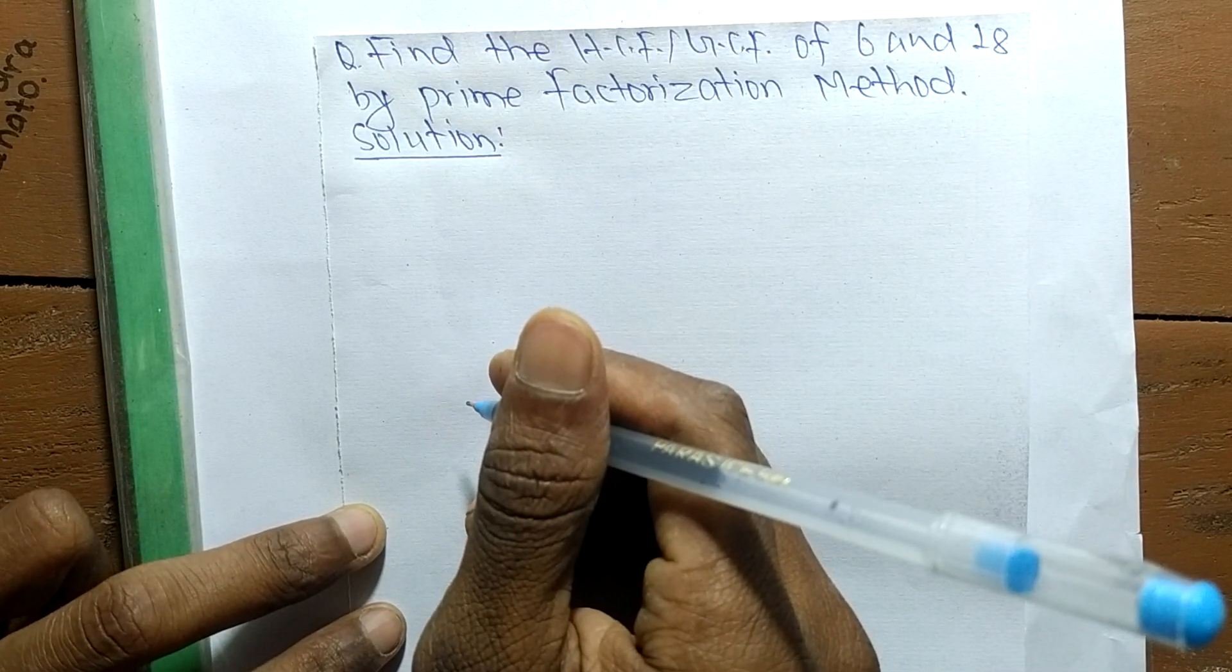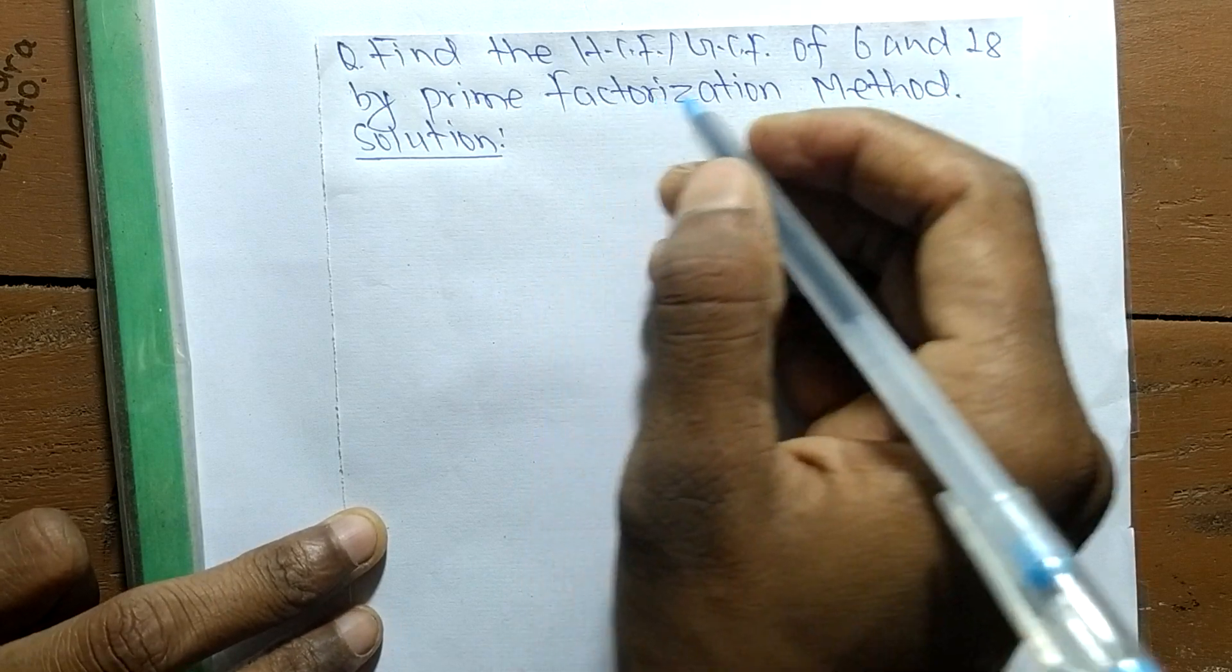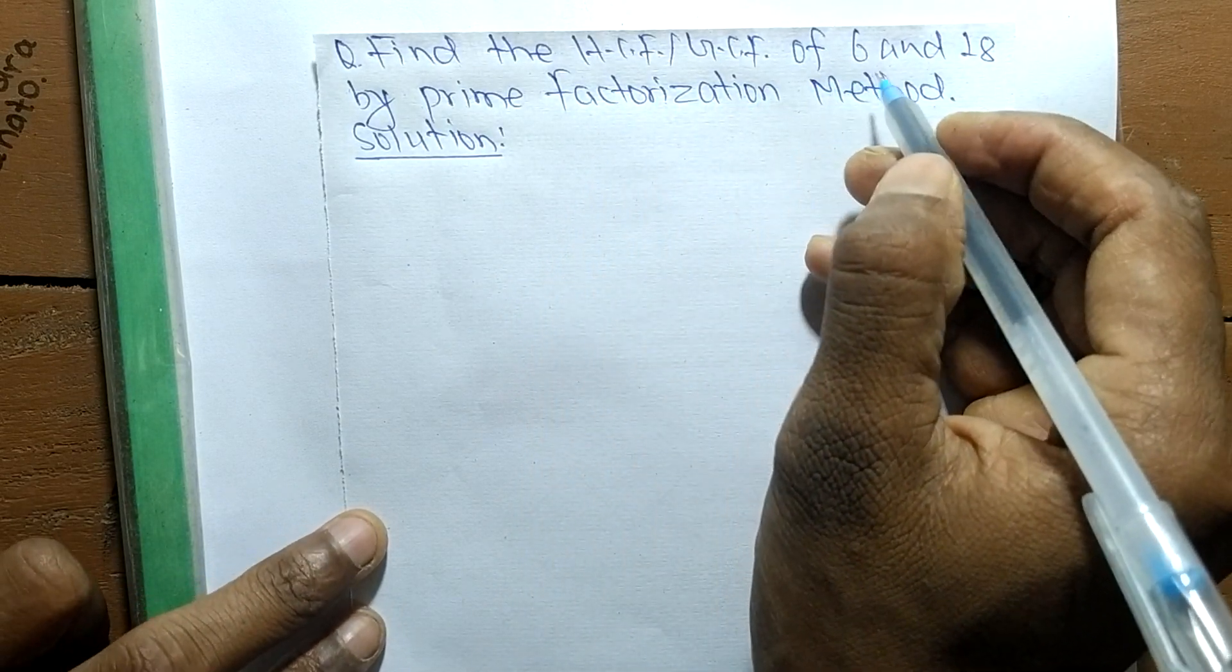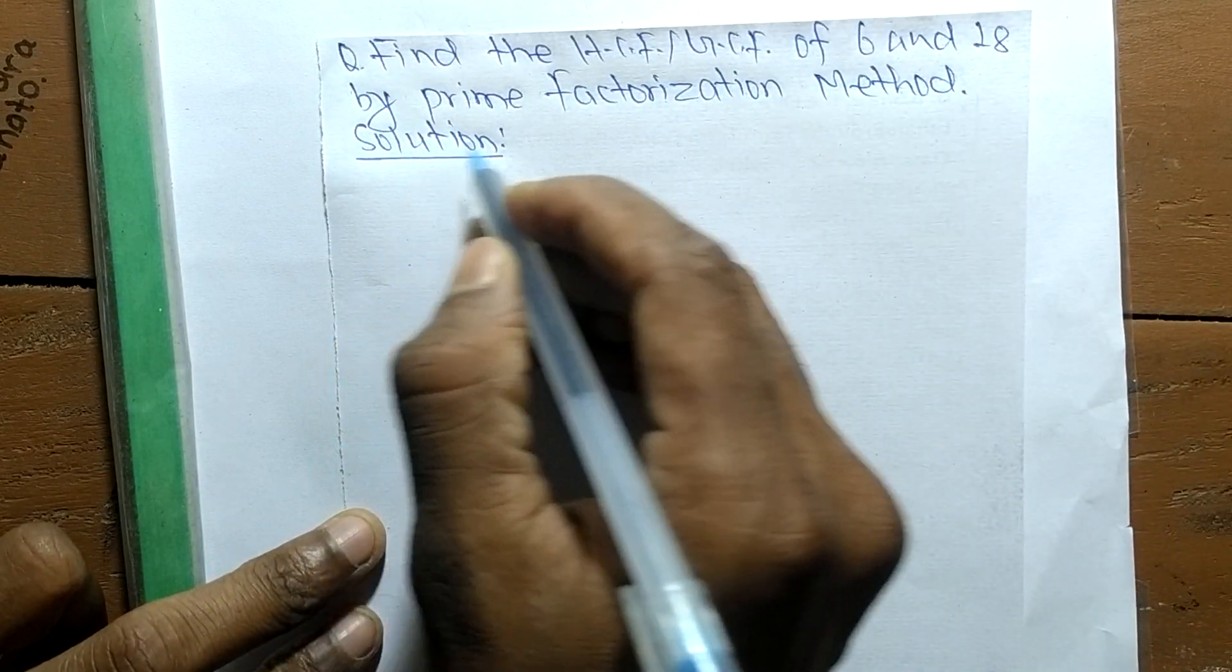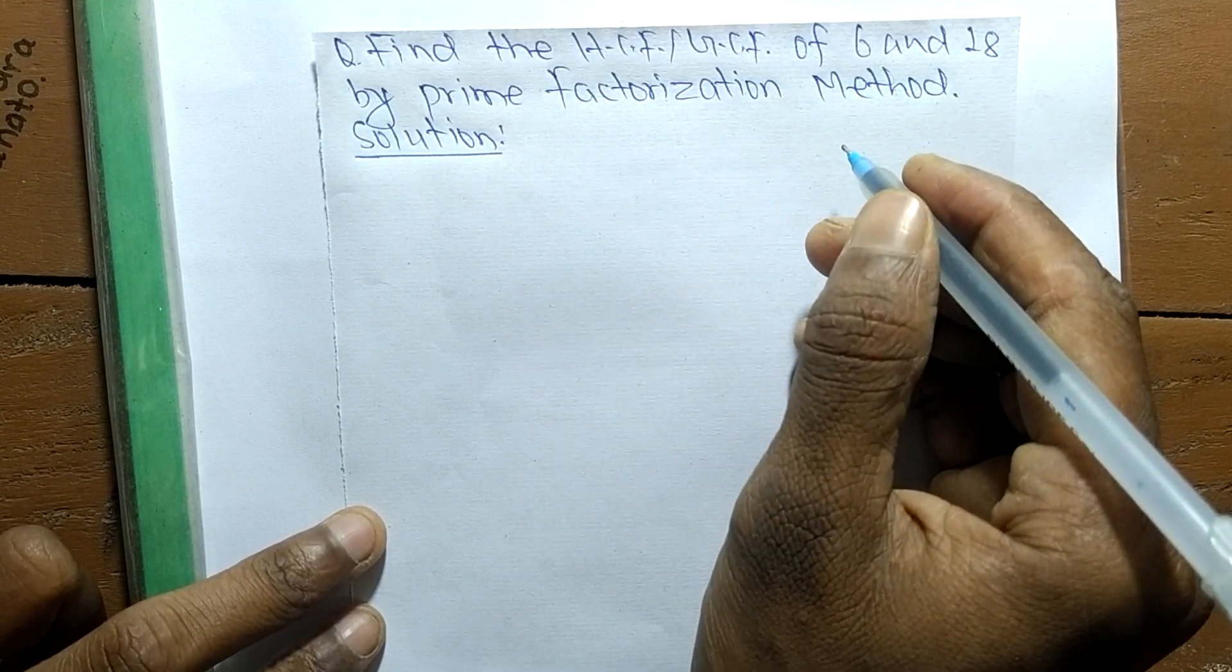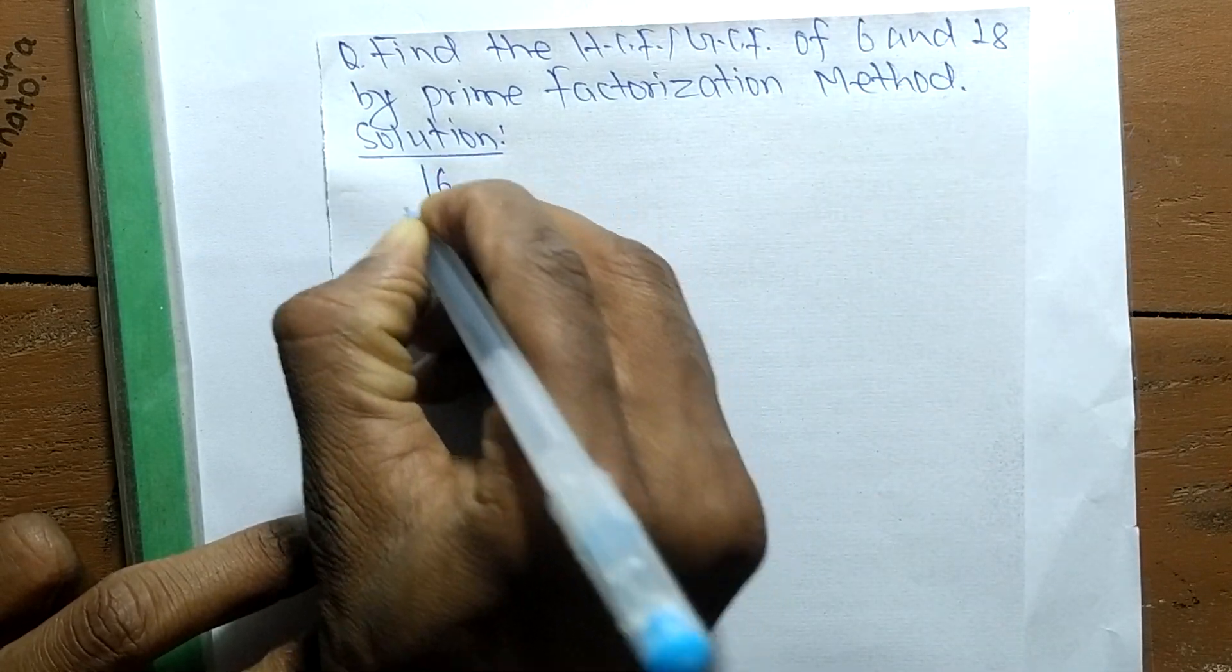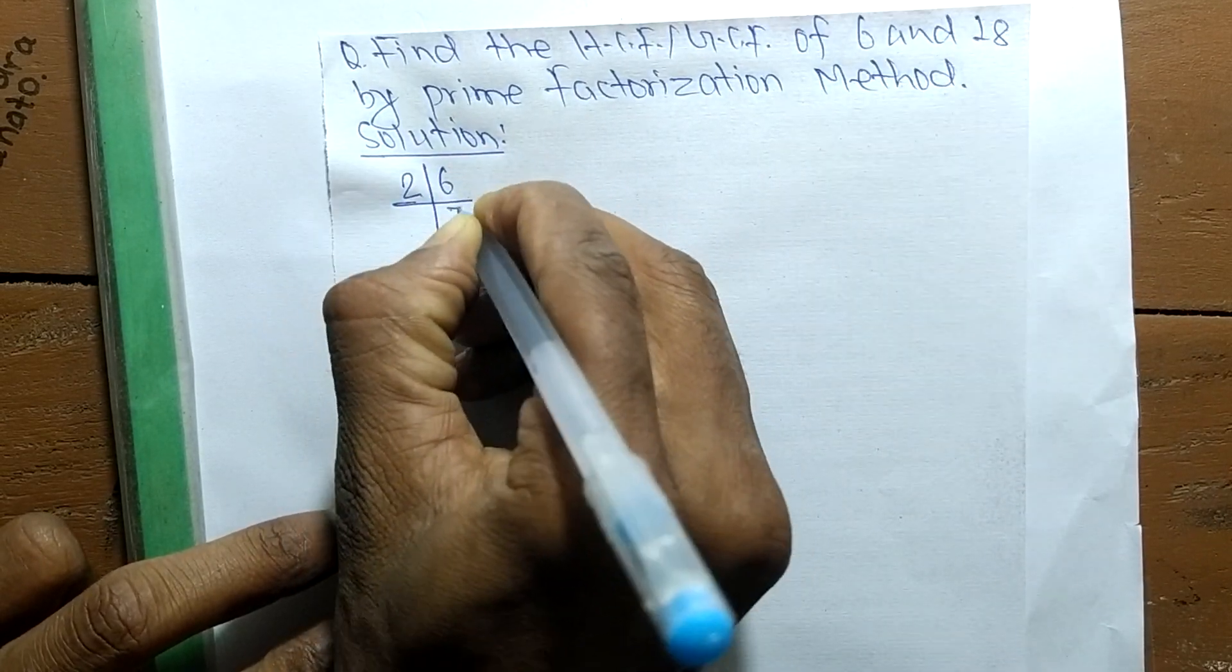Today in this video we shall learn to find the HCF or GCD of 6 and 18 by prime factorization method. So first we find out the prime factors of 6. It is 2 times 3.